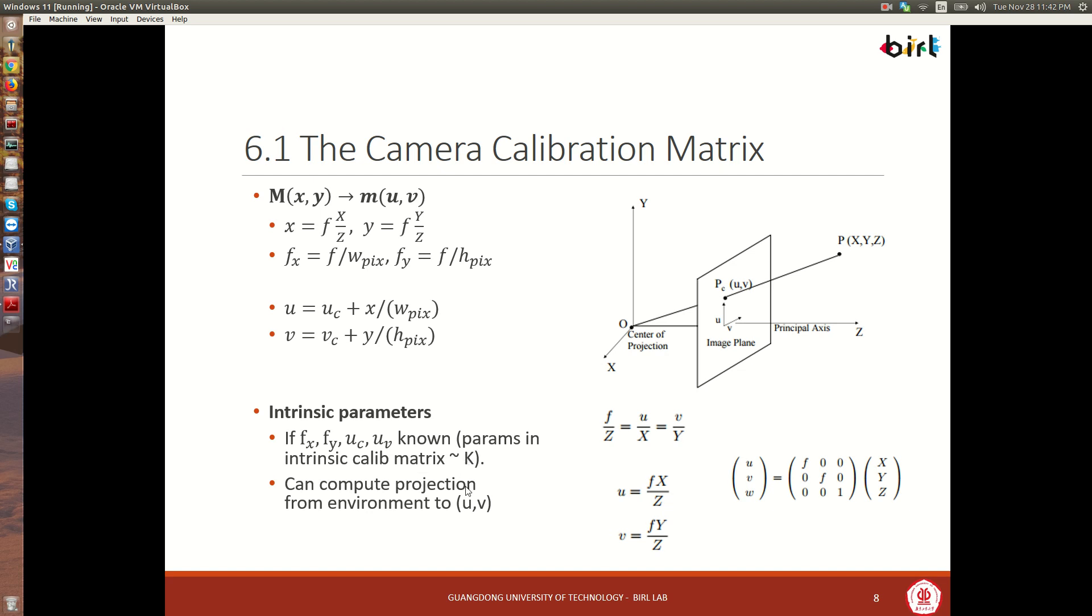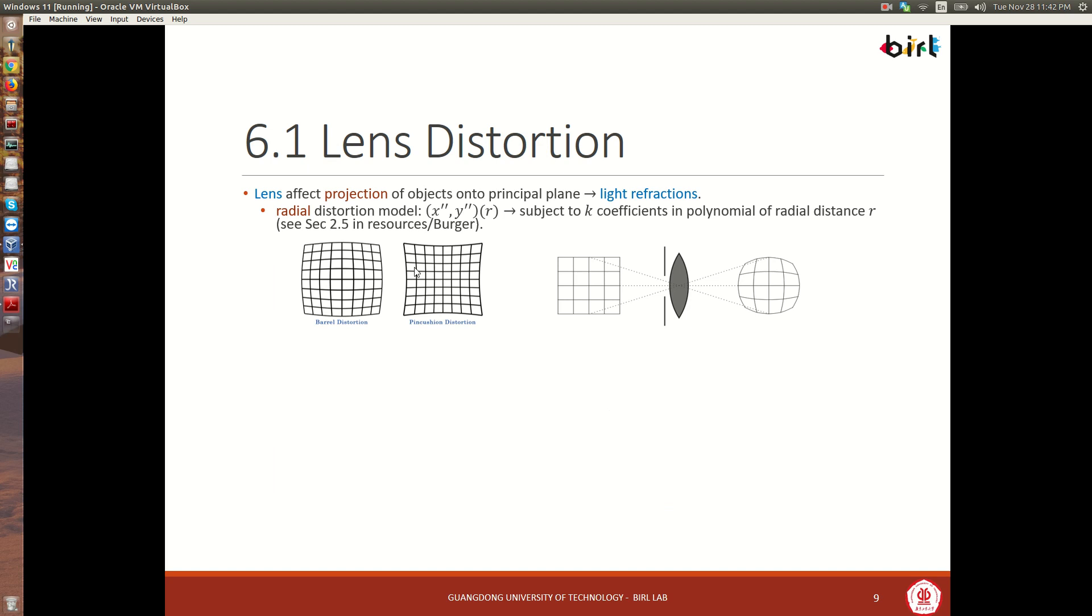And then we can do the projection from the world to the image plane. For lens distortion, we need to know that the lens affects the projection of objects onto that image plane due to light reflections like this. You might have an image and then once it goes through the lens, you end up getting something that looks like this. Not just distorted.